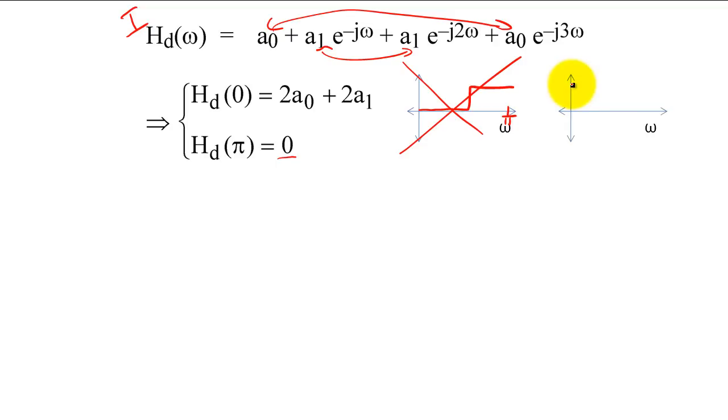Because we need the filter equation evaluated at zero to be non-zero to create a low pass filter, we can see that an evenly symmetric filter with an even number of filter coefficients can implement a low pass filter.